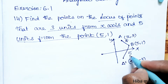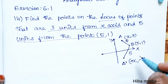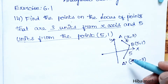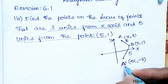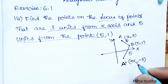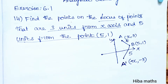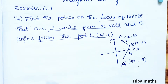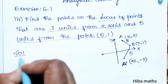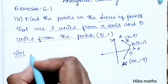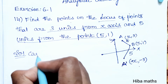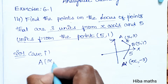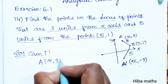This distance is 5. How do we get two points? A is a dash. If we get two points, we will solve this sum. So there are two cases: the first case is positive and the second case is negative. In the solution, case one: the point is (x, 3).